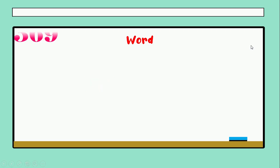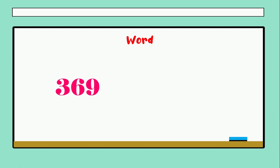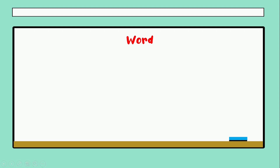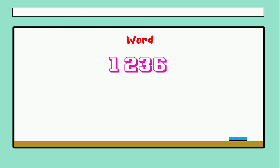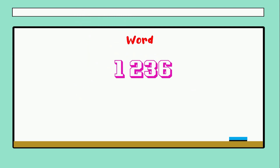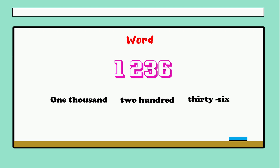The next example: three hundred sixty-nine. Very good. What do we have in the next example? We have the short number — seventy-two. The next, the greatest: one thousand two hundred thirty-six. That is the name of this number.